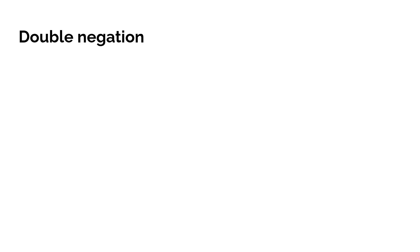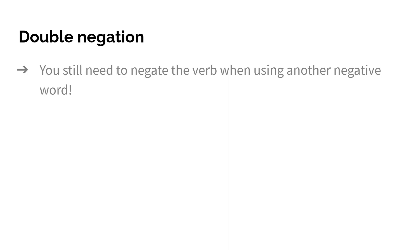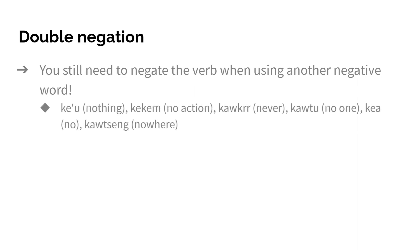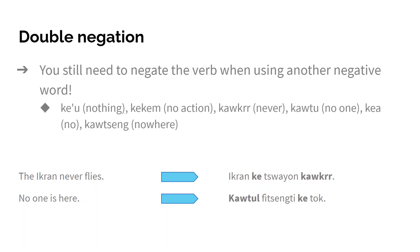Double negation is everyone's favorite topic when it comes to negation in Na'vi. If you have another negative word, you still need to negate the verb in Na'vi — in English we don't do that. For example, 'the ikran never flies' — the 'never' already has the negation meaning, so in English you don't say 'the ikran does not never fly.' In Na'vi we have to double negate this: 'ikran ke zwayon kawkrr.' Even though we have 'kawkrr' meaning 'never' in the sentence, we still need to put 'ke' in front of the verb.